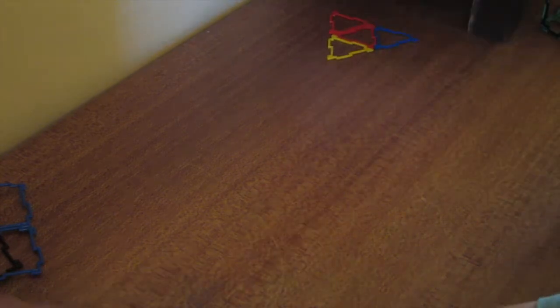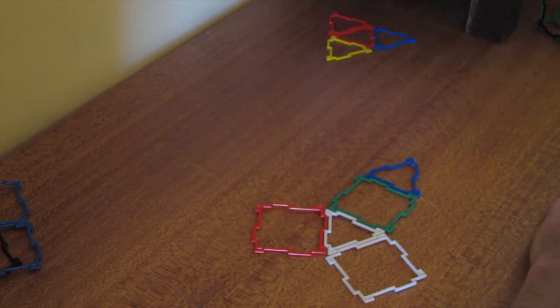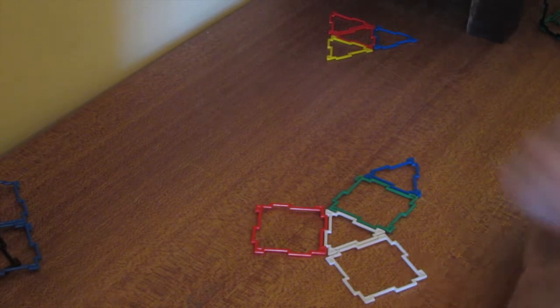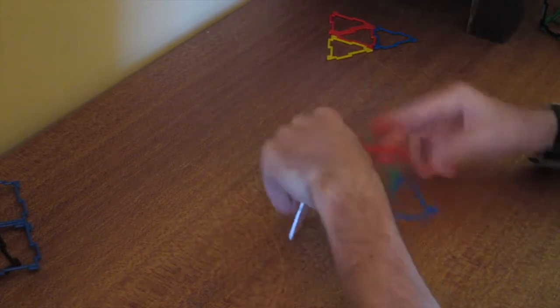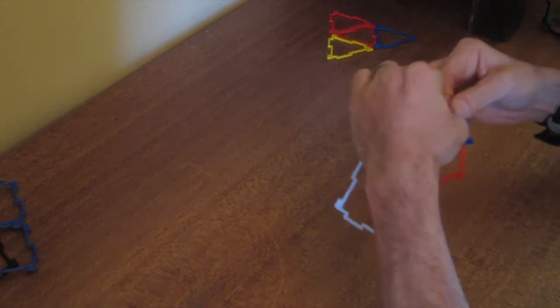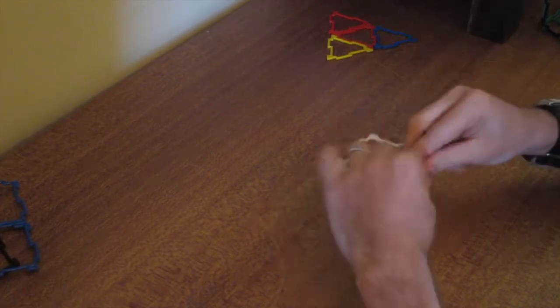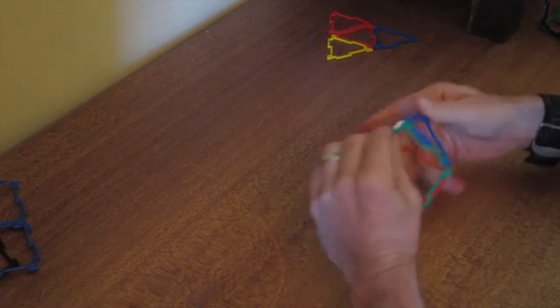Now, we have a variety of nets. This is the net for a triangular prism. If I fold this up, this will also create me a 3D shape, this time creating a triangular prism.